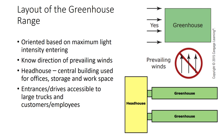Success in the greenhouse industry begins with good planning. After a location has been selected, the greenhouse range and benches within must be properly laid out. The greenhouse range must be oriented to maximize light entering the greenhouse, and knowing the direction of prevailing winds helps minimize heat loss. A key part of a greenhouse is a head house, the central building used for offices, storage, and workspace. The areas around the greenhouse should have entrances and drives accessible to large trucks, customers, and employees.